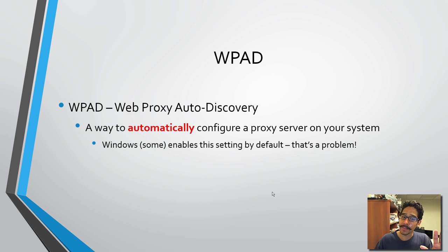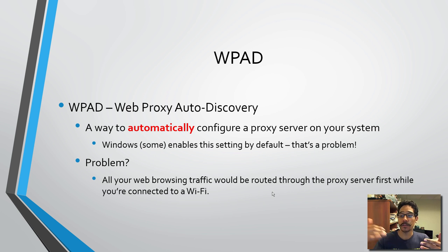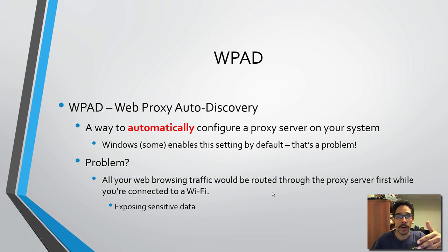Windows sometimes enables this by default, and that's a problem especially on Windows 10. Why is it a problem? All your web browsing traffic will be routed through the proxy server first while you're connected to Wi-Fi. That's not good — the information you're surfing is going to be exposed, including sensitive data such as your passwords and credit card info through that proxy server tunnel.